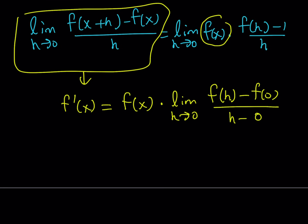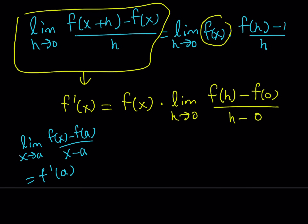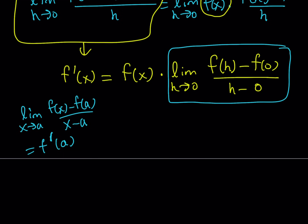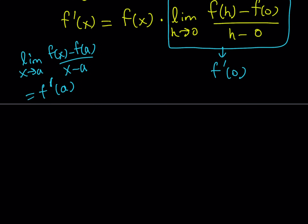Now what does this look like? If you consider the limit as x approaches a of f of x minus f of a divided by x minus a, that gives you the derivative of a function at a point, which is f prime of a. So our expression looks like the derivative of f at 0, which is f prime at 0. So f prime of x equals f of x times f prime at 0.